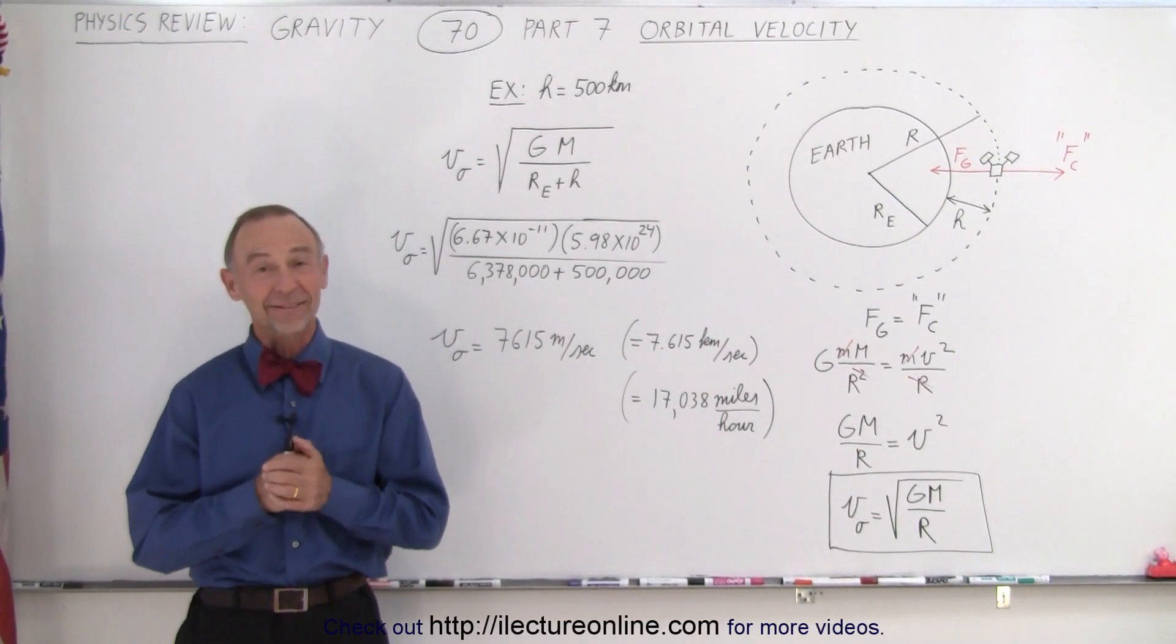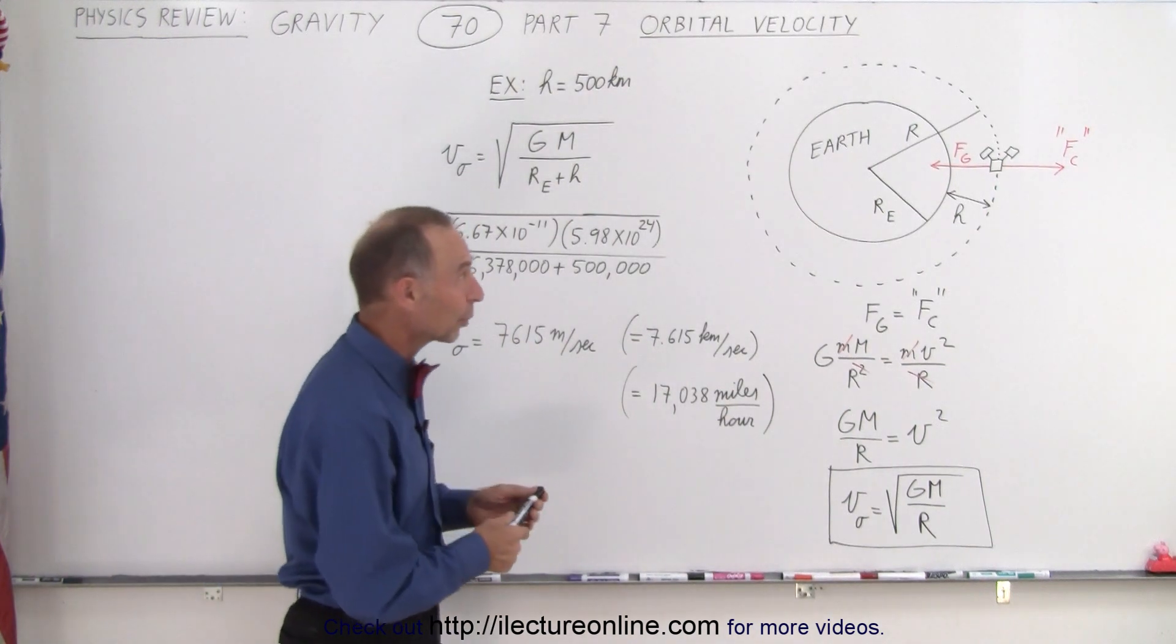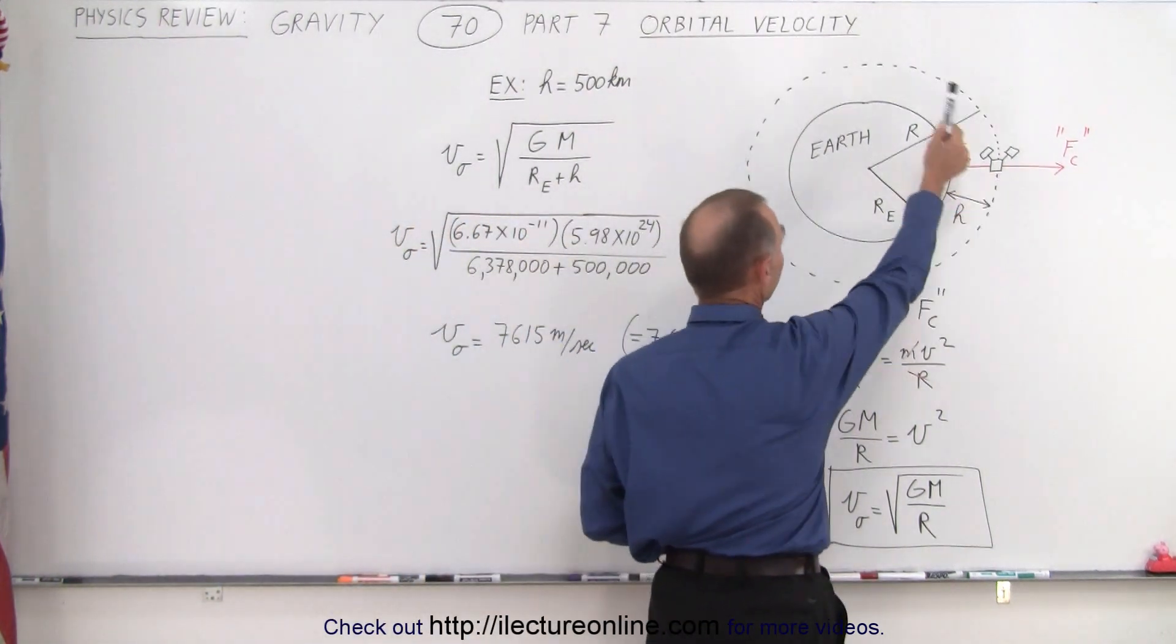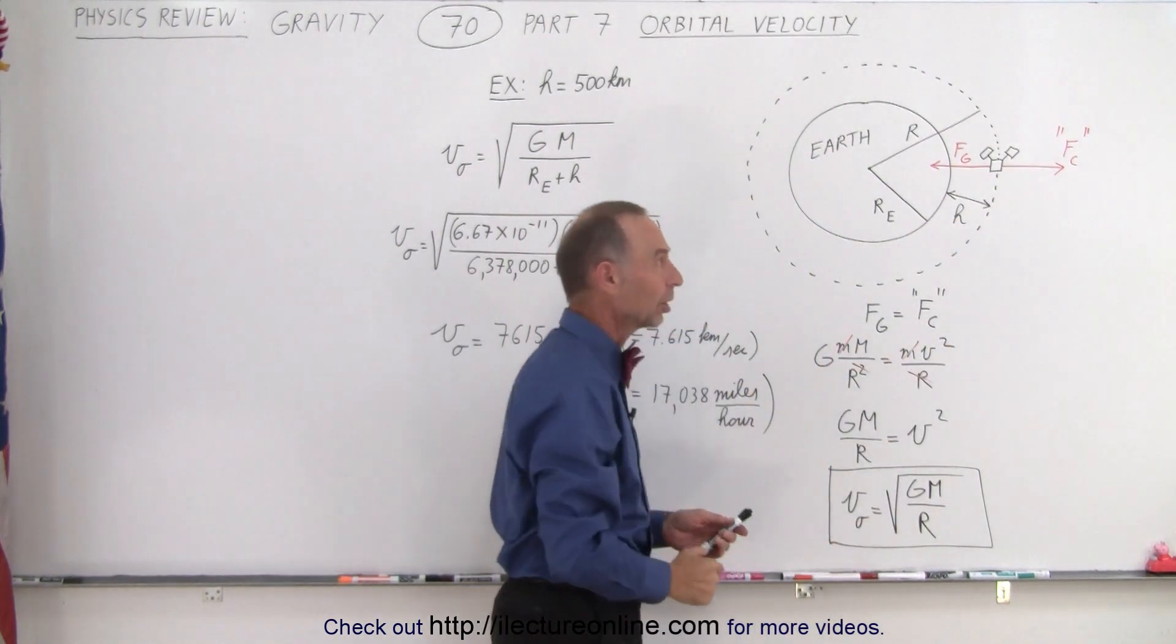Welcome to ElectronLine. Now let's take a look at orbital velocity. To be able to explain that, we're going to take a satellite in orbit around the Earth. Let's say that the orbit of the satellite has a height above the surface of the Earth. We'll call that H.